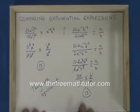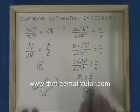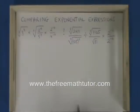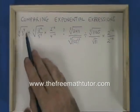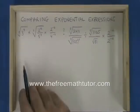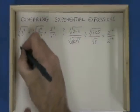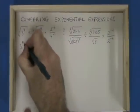This is how we compare two exponential expressions. In this example, I have a cube root of 3 to the power of 9. I'm going to convert that into exponential form, and I get 3 to the power of 9 thirds.